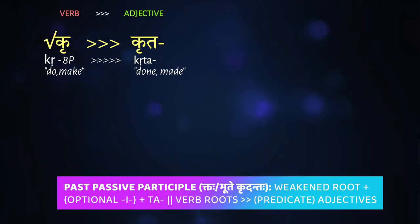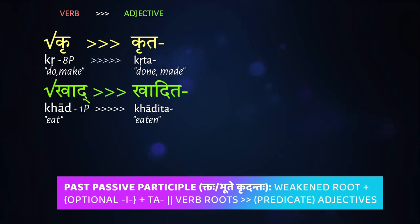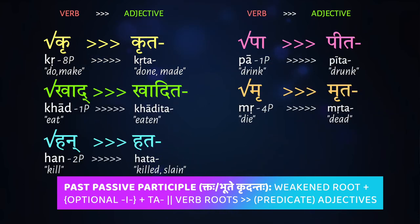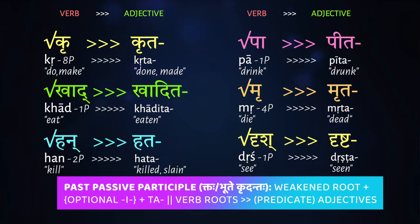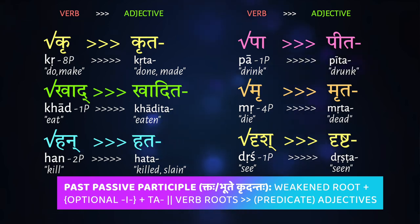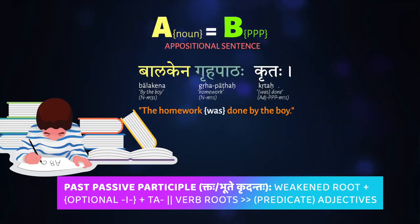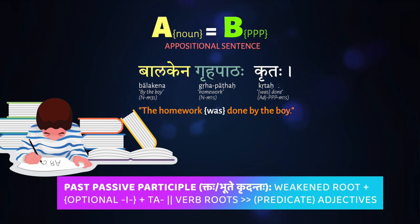If you remember the ktas, the PPPs are words like krta, kadita, hata, pita, mrita, drishta and so on — ways in which verbs are turned into adjectives and made to agree with nouns in a sentence. This allows you to create appositional sentences where the participle functions as what we call a predicate adjective.